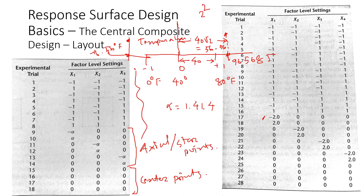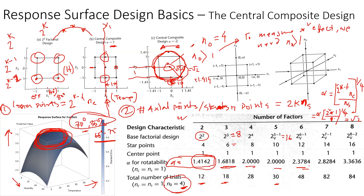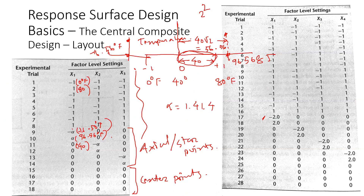In summary, for the temperature variable: coded −α = −16.56°F, coded −1 = 0°F, coded 0 = 40°F, coded +1 = 80°F, and coded +α = 96.56°F. To convert any coded axial point, multiply the half-range by the alpha value for your design. Excel can be used to create all these layouts manually, or Minitab can generate central composite designs automatically.